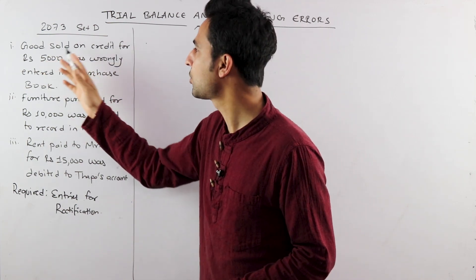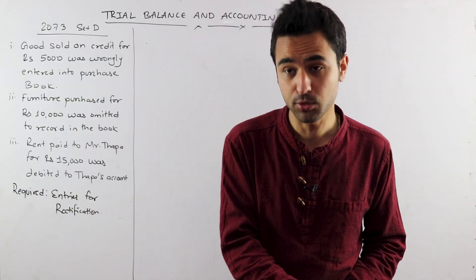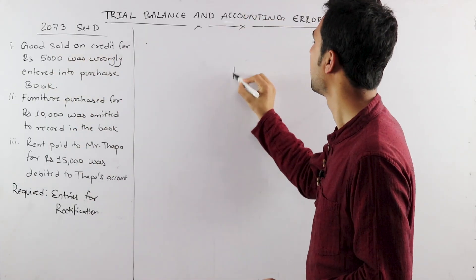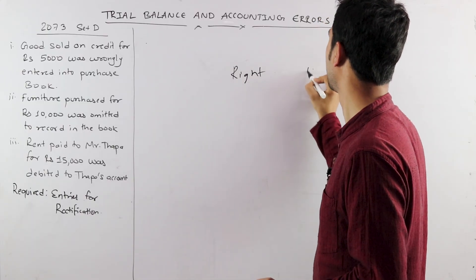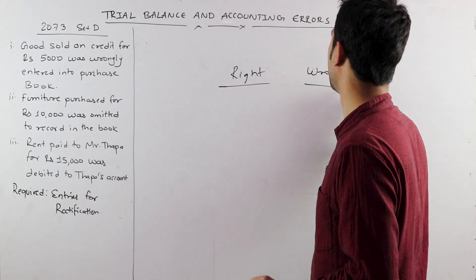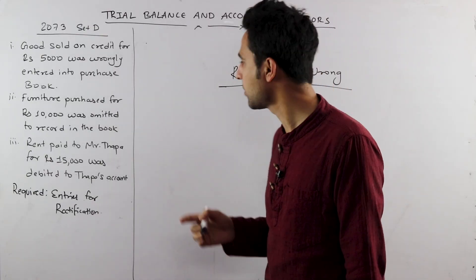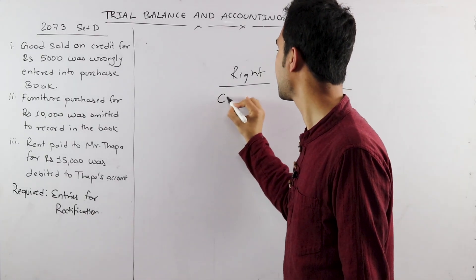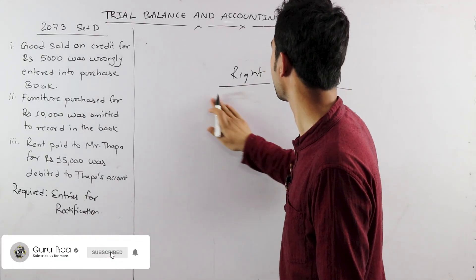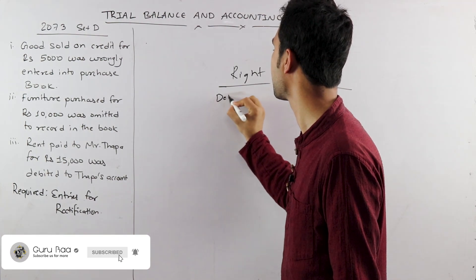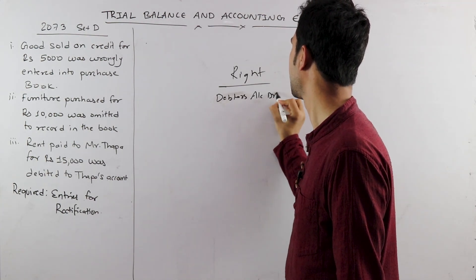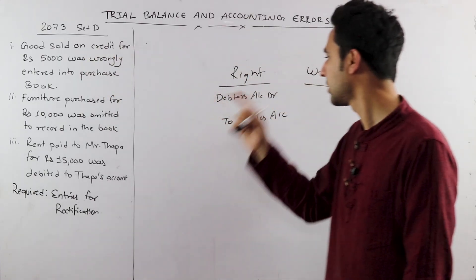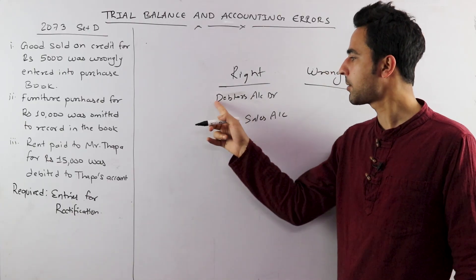Goods sold on credit for Rs. 5,000 was wrongly entered into the purchase book. You should know which entry to pass. For goods sold on credit, the correct entry is: Debtors account debit to Sales account. This is goods sold on credit.